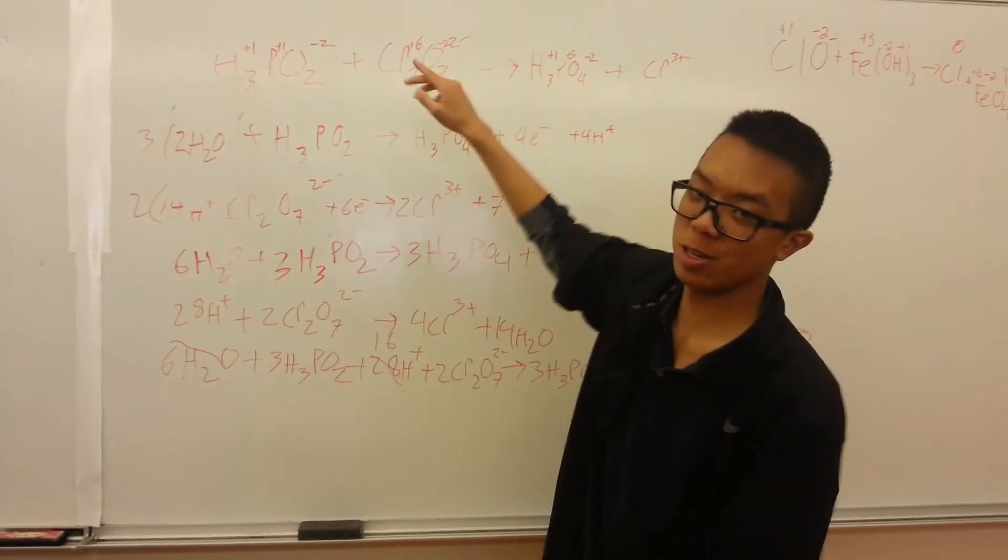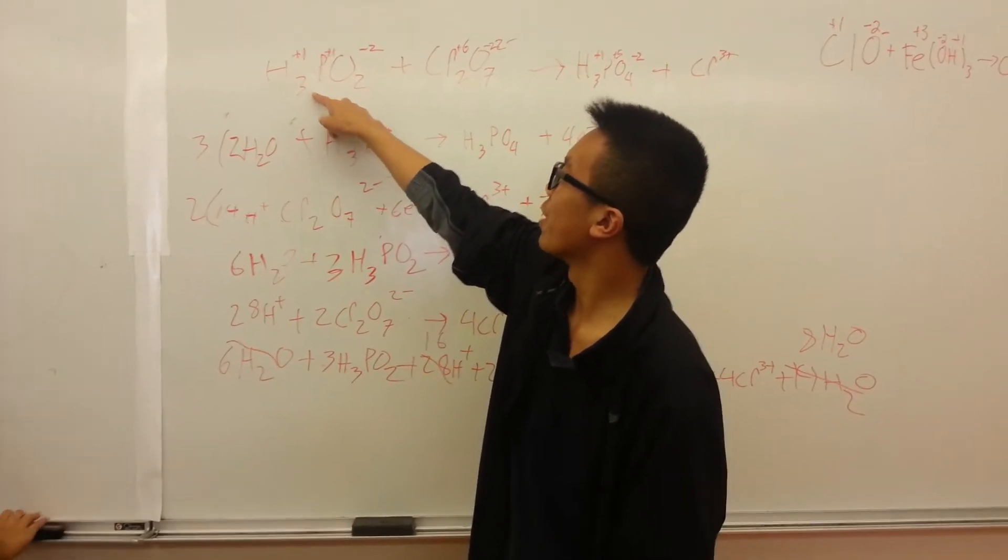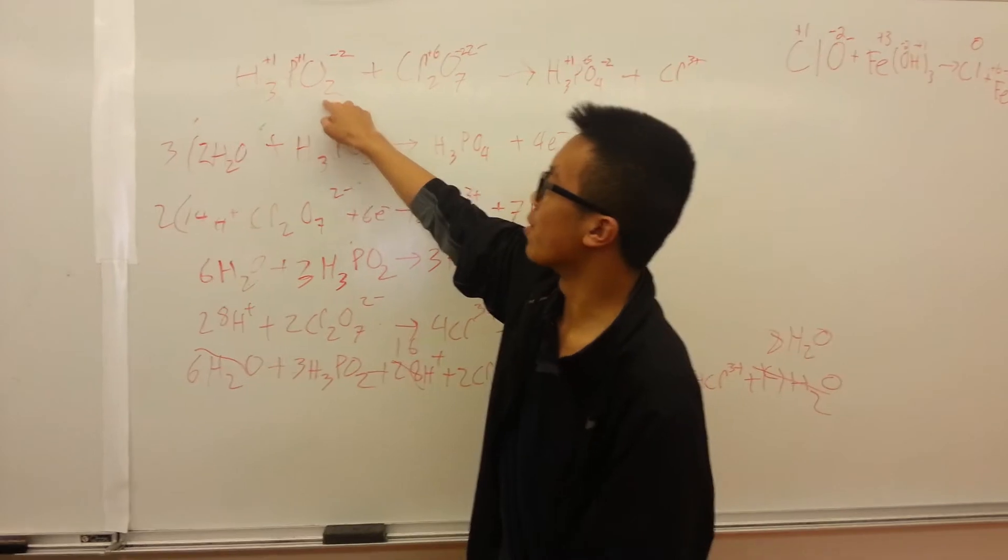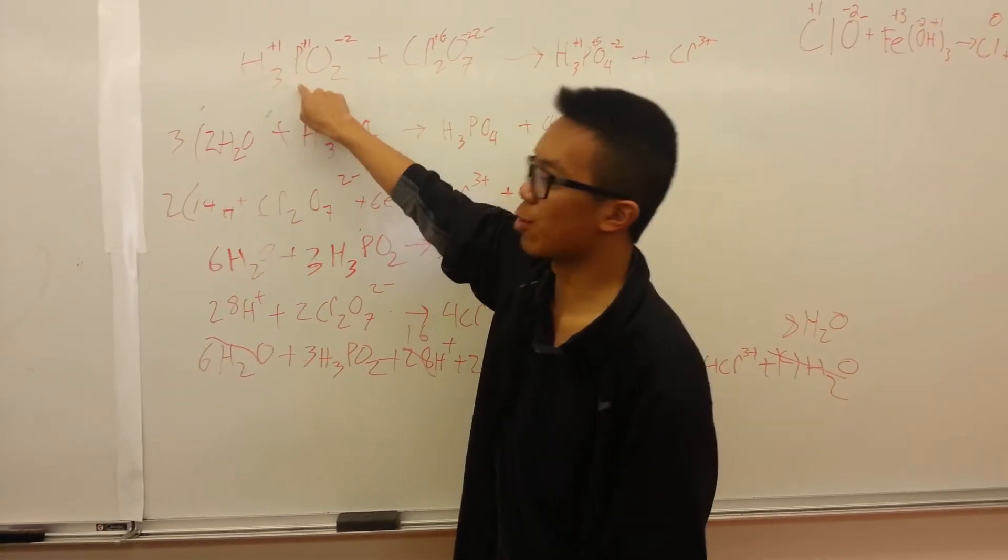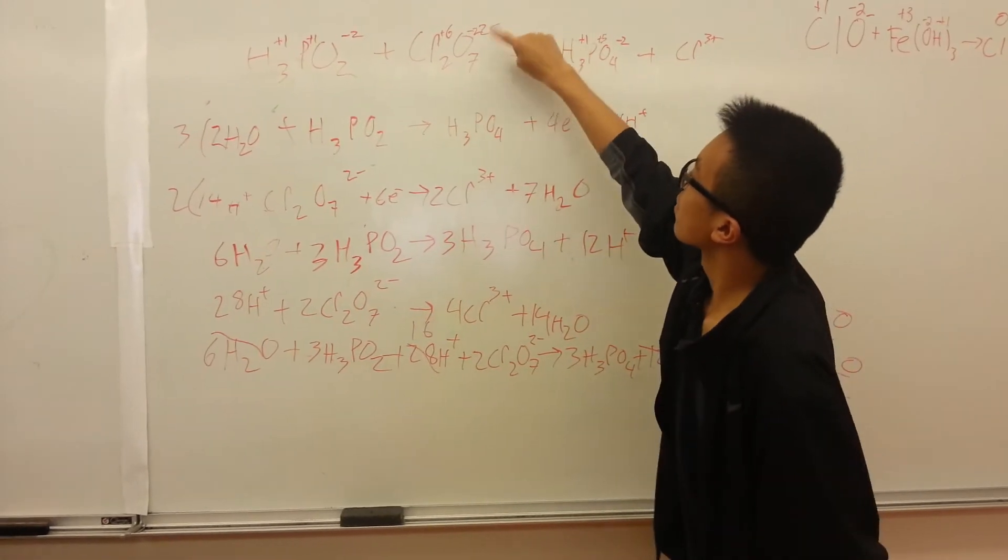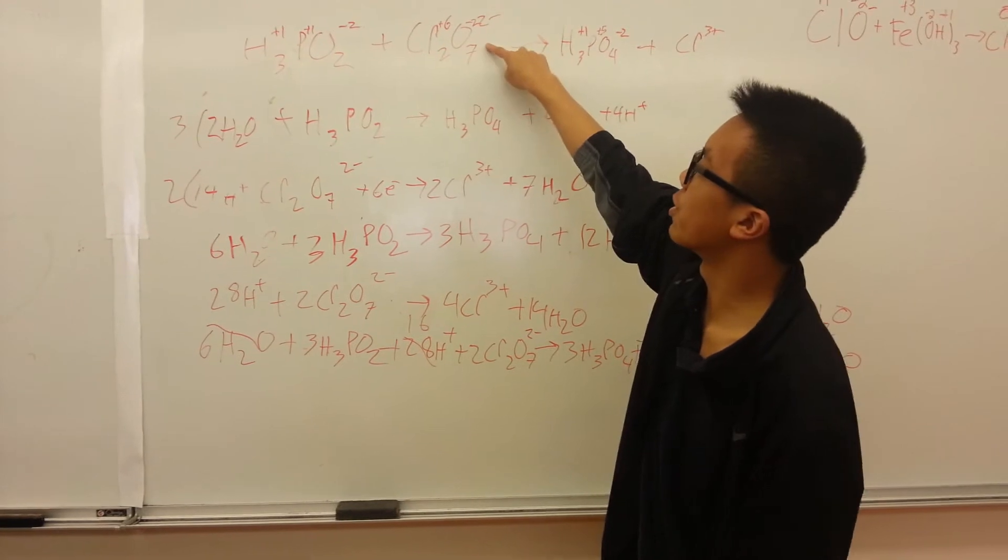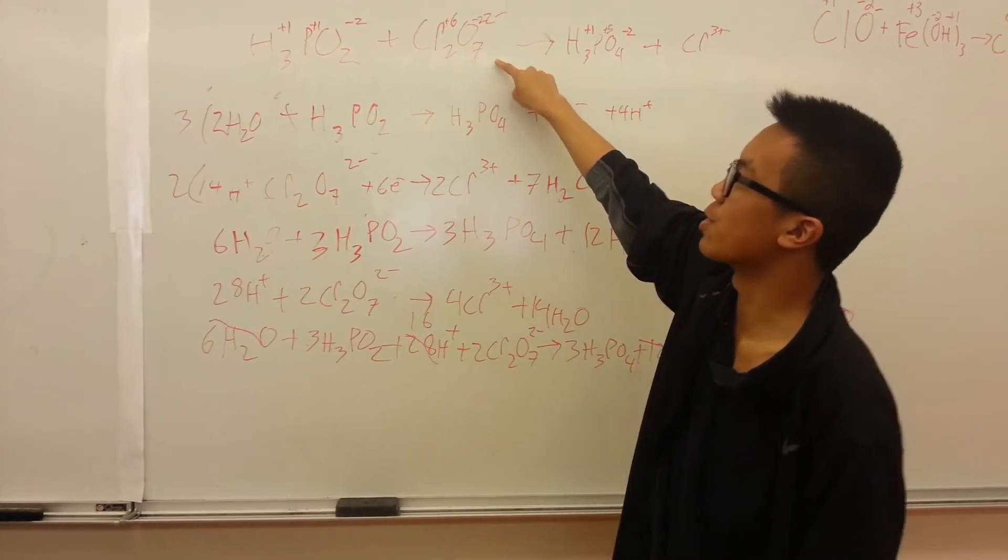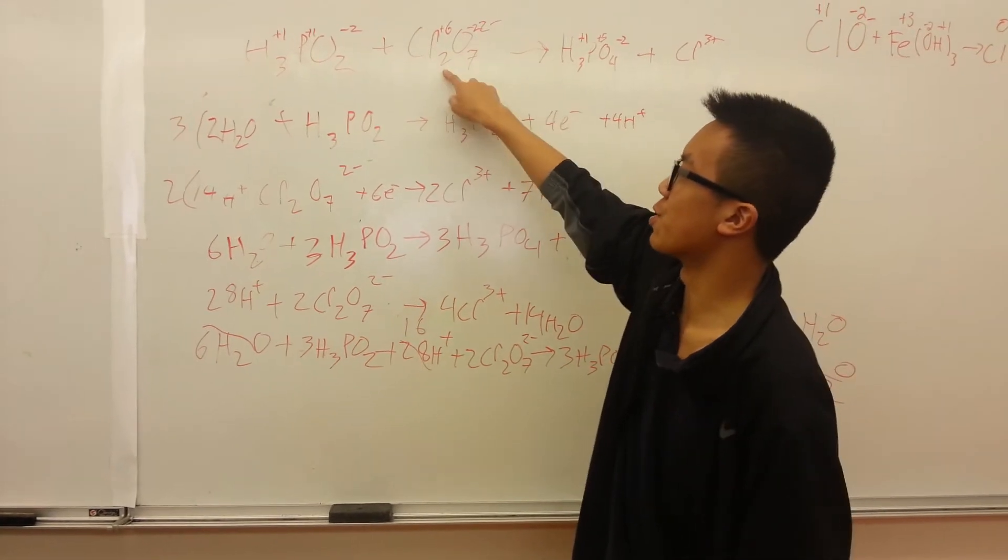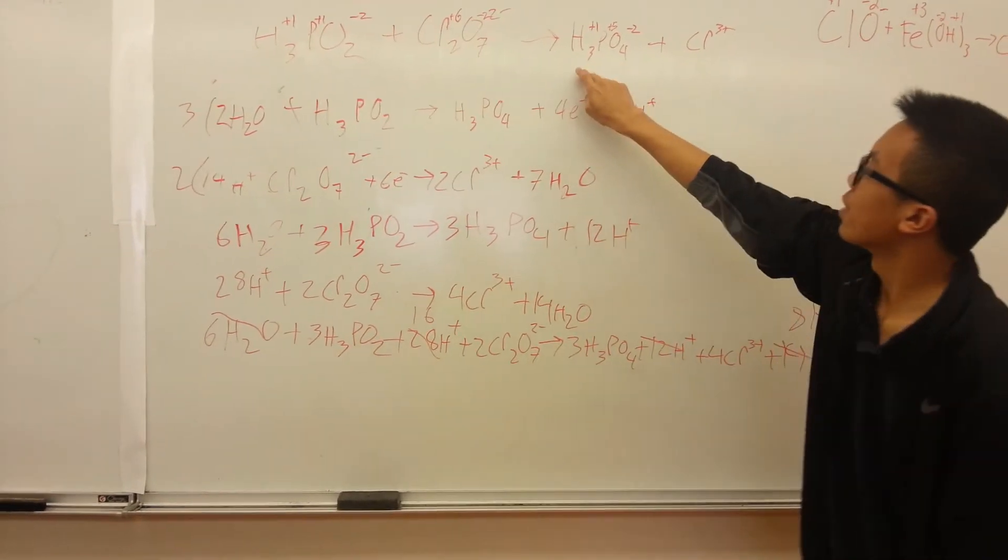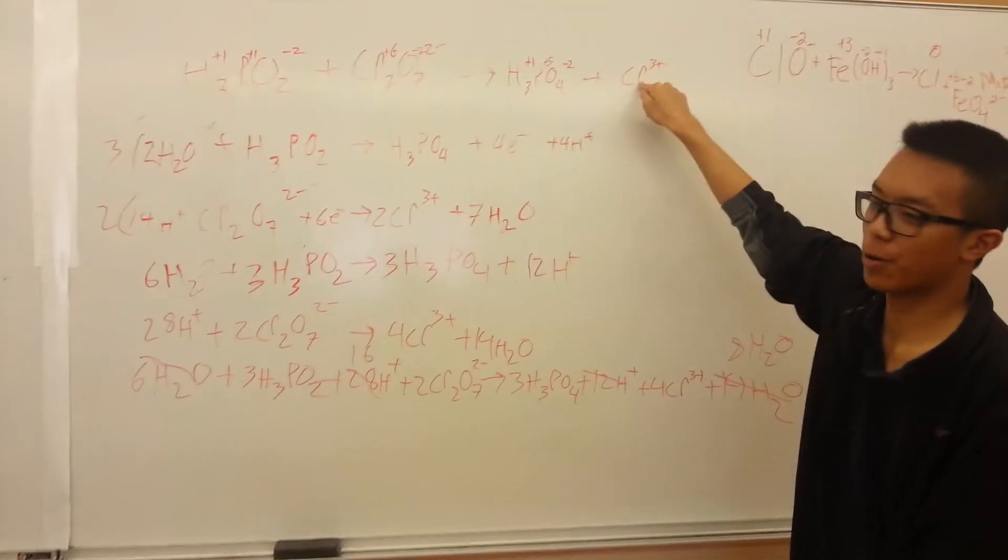Now what we have to do is determine the oxidation numbers. Since we already did that, H is always +1 and oxygen is always -2. Multiplying these together, P would be +1. This whole thing is -2, and oxygen is -2, so it would be -14, and -14 plus 12 is -2 because there's 2 of them, so CR is +6. Hydrogen is +1, oxygen is -2, so P is +5, and CR is already 3+.